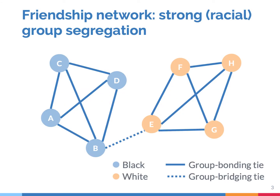Group segregation is strong when we have many group bonding ties and few or no group bridging ties. A group bonding tie is a tie between two people who belong to the same group, such as the same racial group. A group bridging tie creates a link between people from different groups. In this case, there's strong segregation by race.